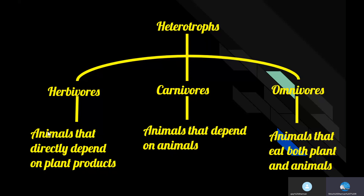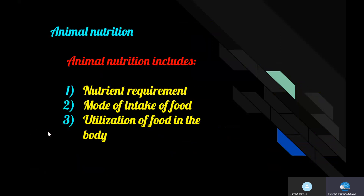Examples of herbivores are animals which eat plants, like deer, goat, sheep, and cow. Carnivores are animals like lion, tiger, and dog. Omnivores include bear and many more.